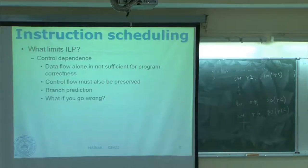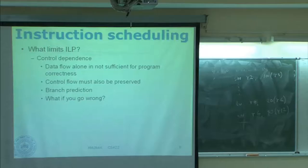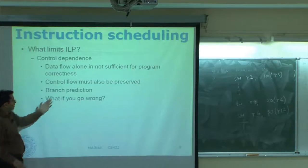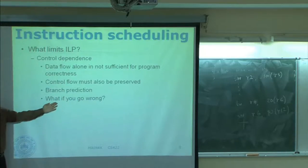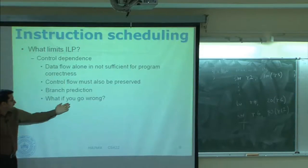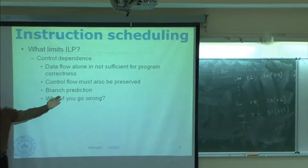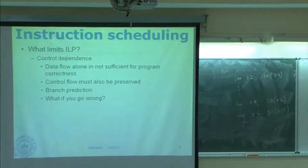The third thing that limits ILP is control dependence, which we have already discussed in great detail. Simply because data flow alone is not sufficient for program correctness — control flow must also be preserved, because that decides along which path you execute. The solution is branch prediction. And what if you go wrong? We need systematic ways of recovering from mispredictions, because a large number of instructions might have been issued on the wrong path when a branch finally resolves — especially if you have a very long pipe.